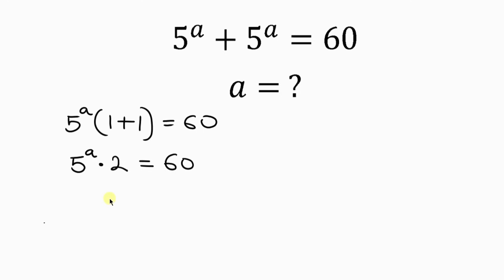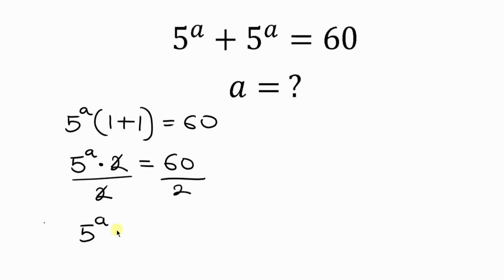Our next step will be to divide both sides by 2. I'll divide the left hand side by 2 and also the right hand side by 2. So 2 cancels out 2 from the left, leaving behind 5 to the a to be equal to — on the right hand side, 60 divided by 2 is 30.